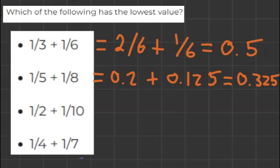And now for the third one, 1 over 2 equals 0.5 plus 1 over 10 equals 0.1. And together this is 0.6.